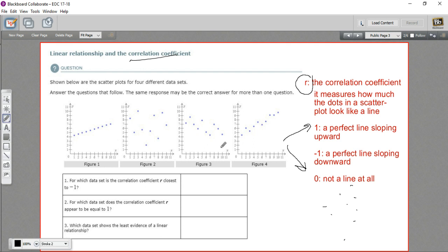So our job in this problem is to take a look at these scatter plots and decide what their correlation coefficients might be. So let's look at these questions here. The first one says, for which data set is the correlation coefficient r closest to negative 1?